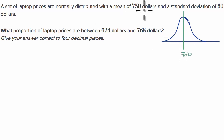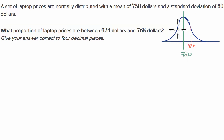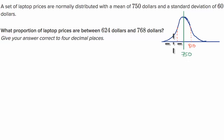They also tell us that we have a standard deviation of $60. So one standard deviation above the mean would be 750 plus 60, which is $810. One standard deviation below the mean would be 750 minus $60, which is $690.